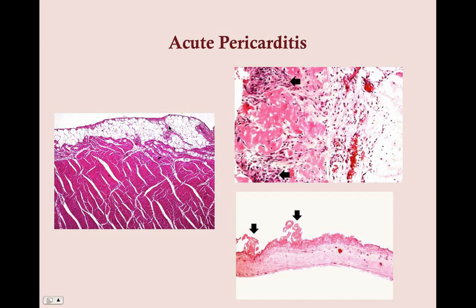Here is an example of acute pericarditis histology — though you won't get these kinds of histology questions on the USMLE. On the left is normal pericardium: you have the myocardium, then the visceral pericardium, then the pericardial sac, then the parietal pericardium. In the infected specimen, you can see white blood cells inside the pericardium and red blood cells collected in the sac. The pericardium is also thickened — in inflammation it shouldn't be this thick.